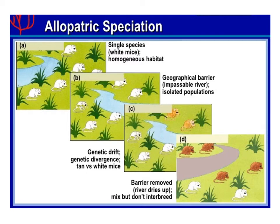These populations have no way of interacting with one another — they are completely isolated, separated, and now have their own different habitats. Due to this geographical barrier, you'll see in picture C that they each become genetically different from one another. One population of mice has now become tan, and one population of mice is still white. And in picture D, even though there is no longer a geographical barrier separating the two populations, they still don't interbreed with one another. They are now just so genetically different that they're a completely different species and cannot reproduce with one another.